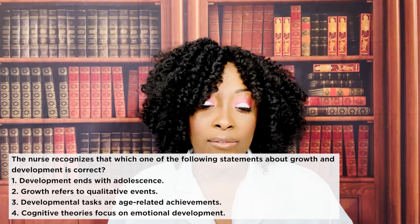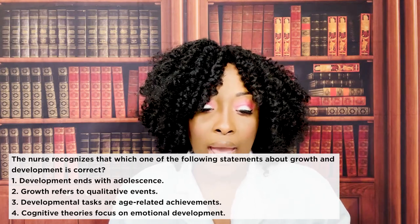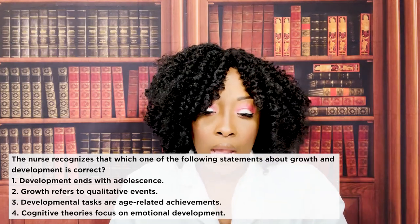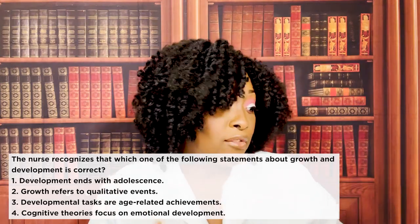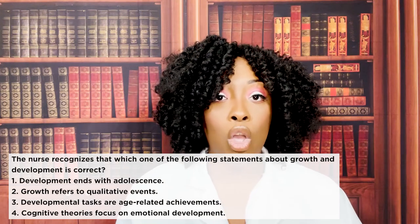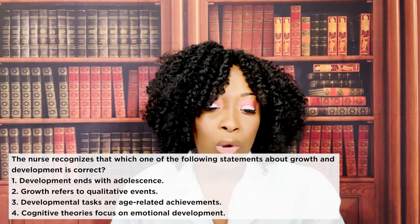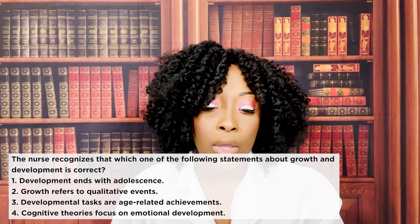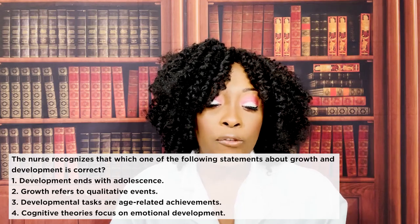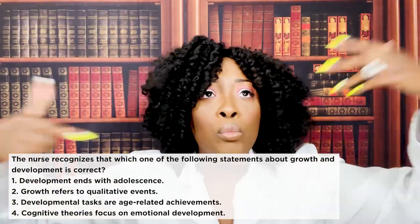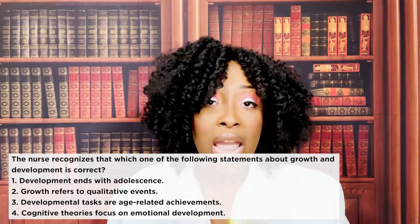Choice two is wrong because growth refers to quantitative events — quantitative means numbers, like two years old, five years old, ten years old. Qualitative refers to the quality of development. Choice four is wrong because cognitive theories focus on thought processes, not emotion — cognitive is how you think and process your thoughts.